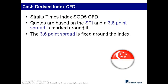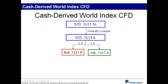Cash-derived index CFDs — which is the Straits Times Index CFDs $5 — are based on the STI index on your platform. As I mentioned, the STI is just an indicator and you can't really trade it directly because there is no real pool of buyers and sellers. So what we do is create a spread around the index so you can trade the live STI. For example, if on Bloomberg you see the STI at 3,115, we round it to 3,115.6, then apply a spread of 1.8 points down and 1.8 points up to give you a buy and sell price.